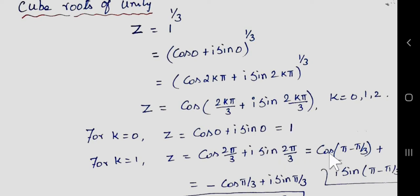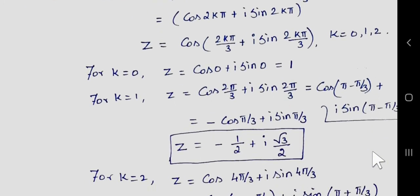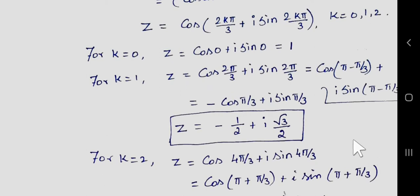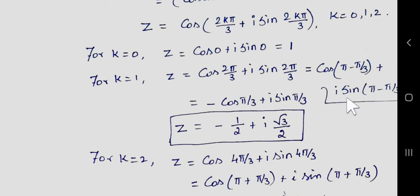For k = 1, we get cos(2π/3) + i·sin(2π/3). We split 2π/3 as π − π/3, which is in the second quadrant (180 − θ form). In the second quadrant, cos is negative and sin is positive, so cos(π − π/3) = −cos(π/3) = −1/2, and sin(π − π/3) = sin(π/3) = √3/2. So the second root is −1/2 + i·(√3/2).